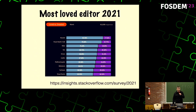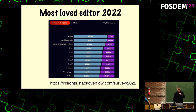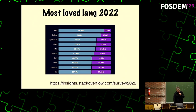Neovim is the most loved editor in 2021 and 2022, and Rust is the most loved language in 2022. So I feel it's a win-win — it's the best combination you can ever see.